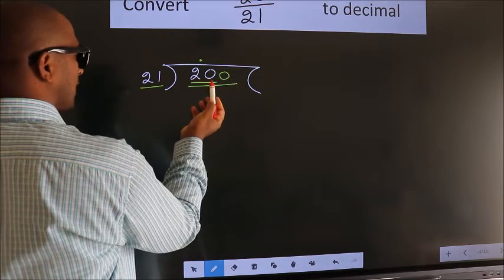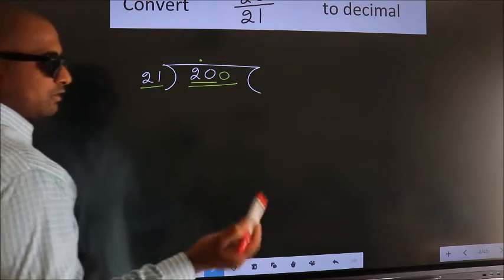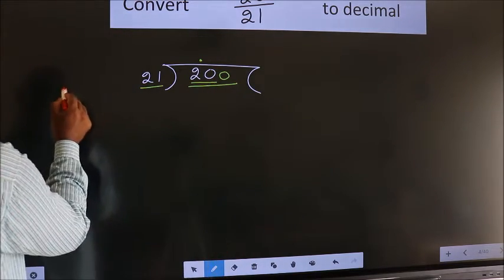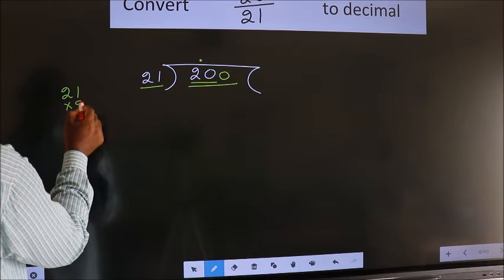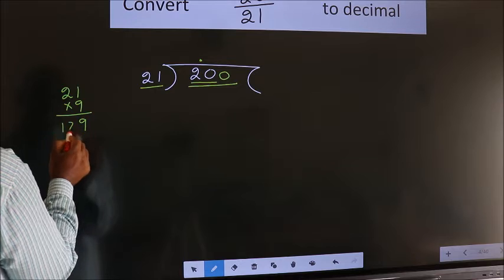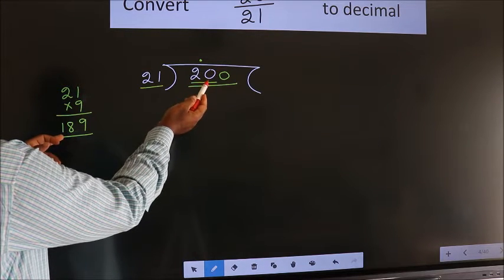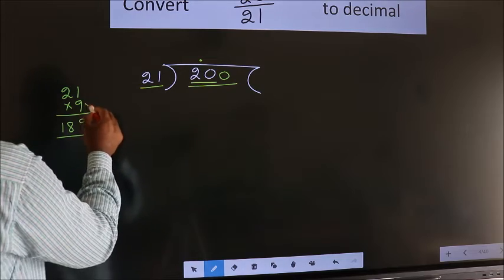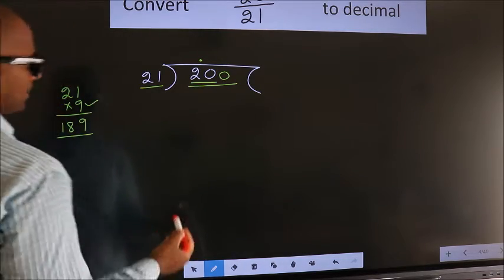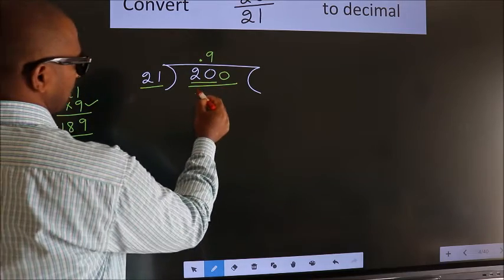A number close to 200 in 21 table is, we go with 9. So 21, 9 times. 9 1s 9, 9 2s 18. 189 close to 200. So we go with 9. So 21 9s, 189.